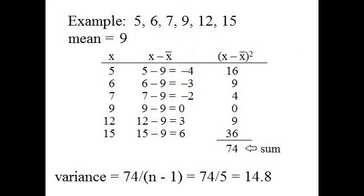And that's in the third column labeled x minus x bar squared. The fourth step is to add the squared differences. So you can see I've added 16 plus 9 plus 4 plus 0 plus 9 plus 36 to get a sum of 74. That's the numerator of the fraction I need for my variance. Because this is a sample, I'm going to divide by the sample size minus 1. So I have 74 divided by 5, and my variance is 14.8.